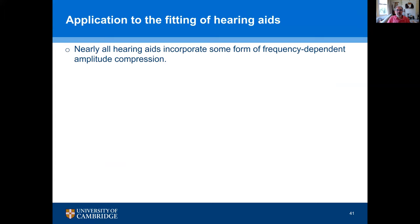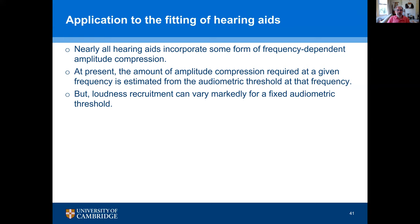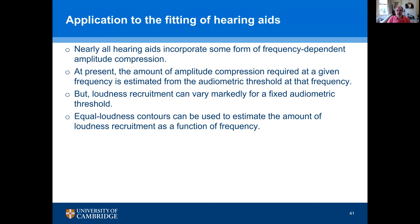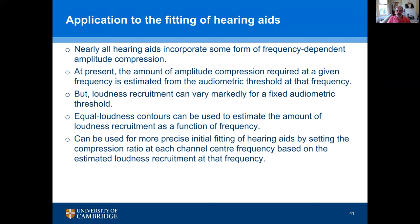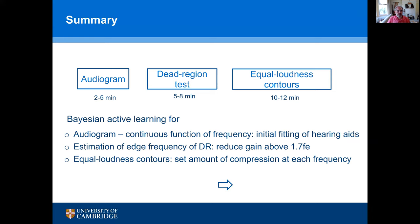This could be applied to hearing aids when adjusting compression. Nearly all hearing aids incorporate frequency-dependent amplitude compression, but currently the compression required at a given frequency is estimated from the audiometric threshold at that frequency — which is not really adequate because loudness recruitment can vary markedly for a fixed audiometric threshold. We think equal loudness contours can be used to estimate the amount of loudness recruitment as a function of frequency and to set the compression ratio at each channel frequency based on the estimated loudness recruitment using the equal loudness contours. To sum up, I've described three tests that can be performed rapidly using Bayesian active learning: the audiogram, edge frequency of a dead region, and equal loudness contours — which we think can lead to more personalized hearing aid fitting in a relatively short time.